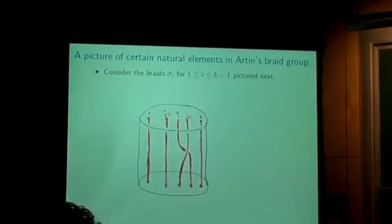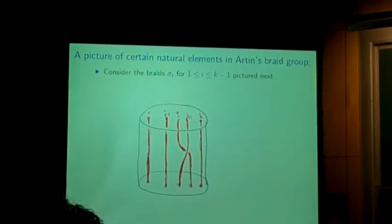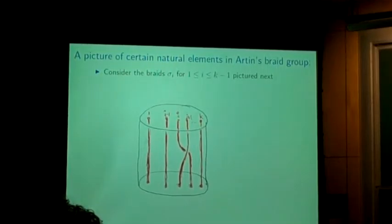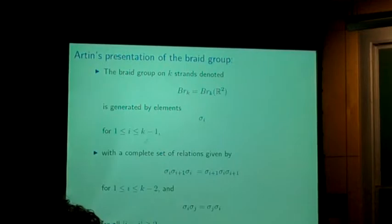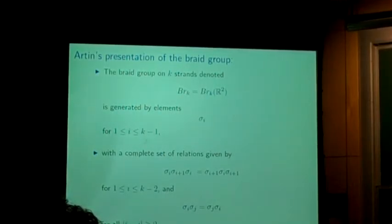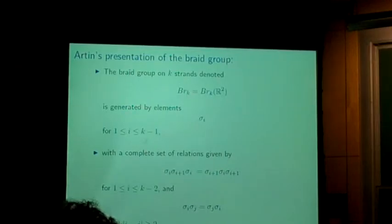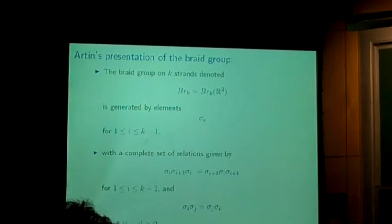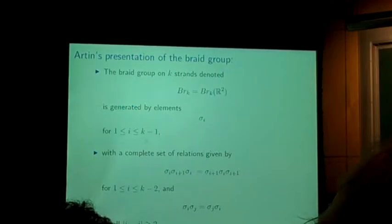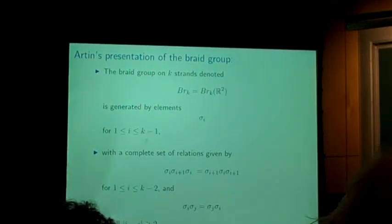Now I want to look at some very simple-looking braids. In this particular braid — a braid with K strands — all of the strands are vertical except for two of them, the i-th and the i-plus-first, and you can imagine swapping the i-th and i-plus-first. That looks like a very elementary braid. Artin gave a presentation of the braid group — think of all possible braids. Two braids are equivalent if one can be transformed to another by tightening up the strings a little bit.